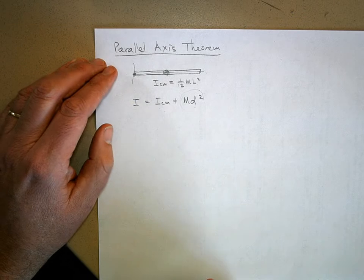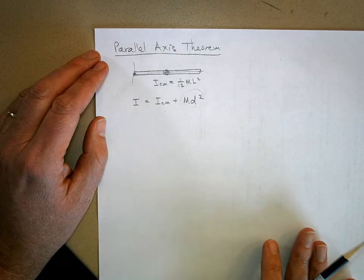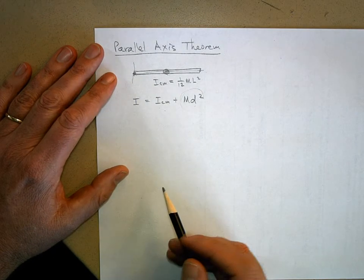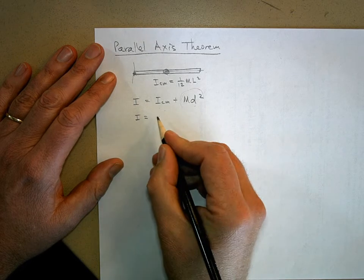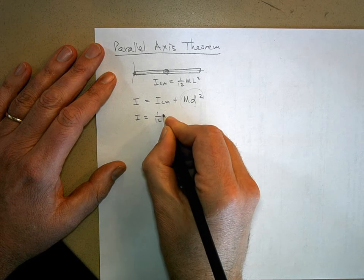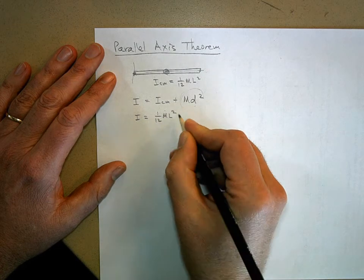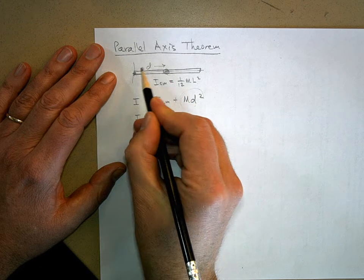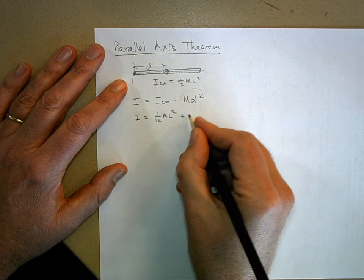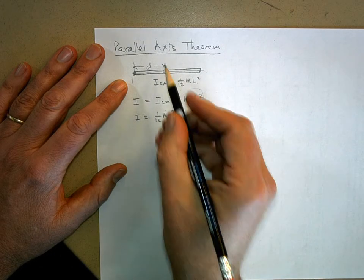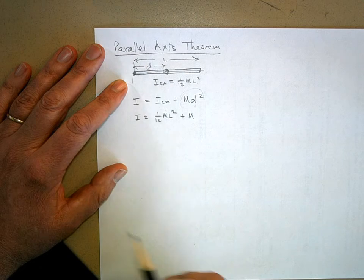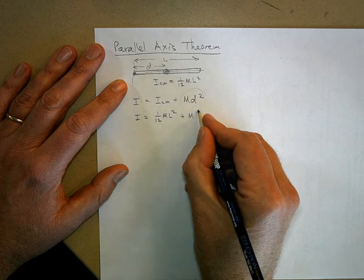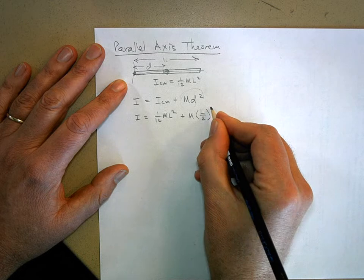Now, there's a proof of this on page 305 of your book, so read it if you need a proof. Now, how would I use this for a stick? Well, I would say I is equal to the center of mass, 1/12 ML squared, plus now if I go all the way to the end of the stick, here's d from here to here, so that's going to be Md squared. But what is d compared to the length of the stick? L over 2, so d is L over 2 squared.